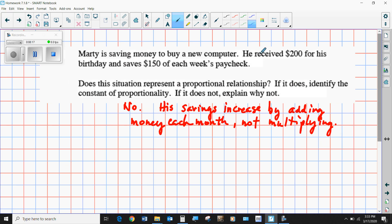Marty is saving money to buy a new computer. He received $200 for his birthday and saves $150 a week. Does this situation represent a proportional relationship? No, it does not. It is not. If we said y was equal to 200 times x, where x is the number of weeks, this would be proportional, because you'd be saving $200 per week.